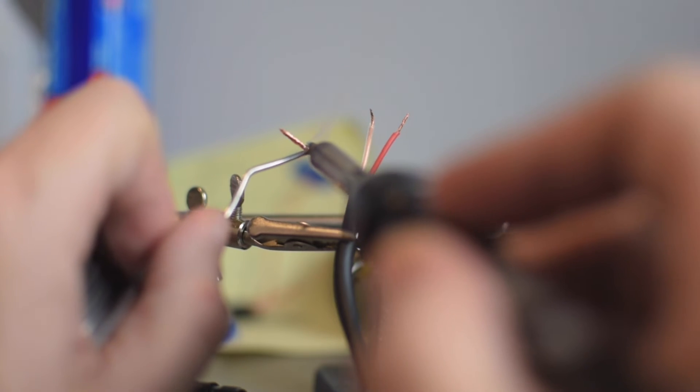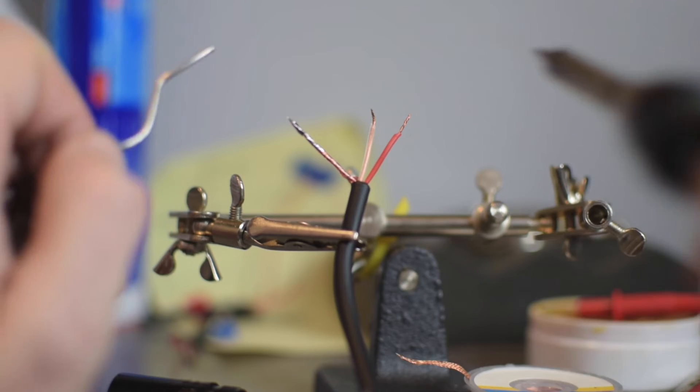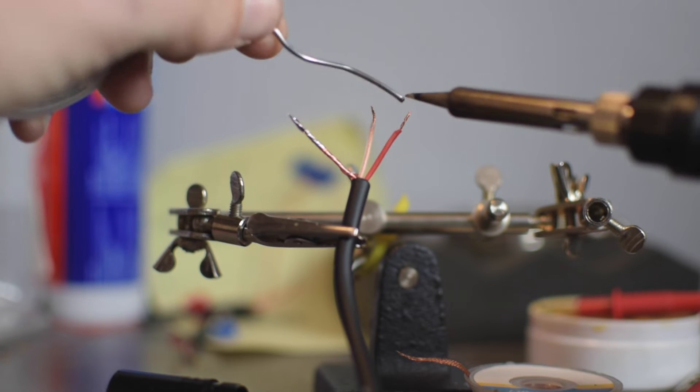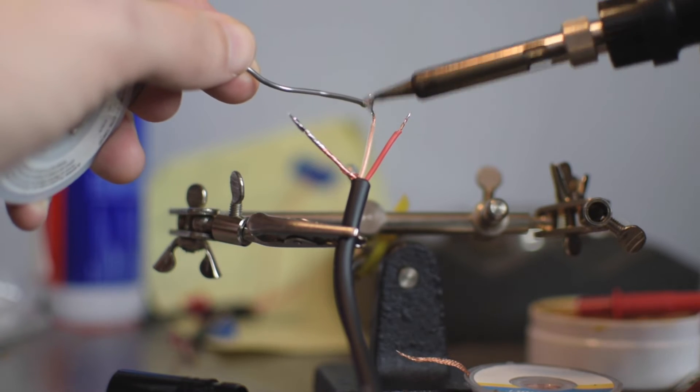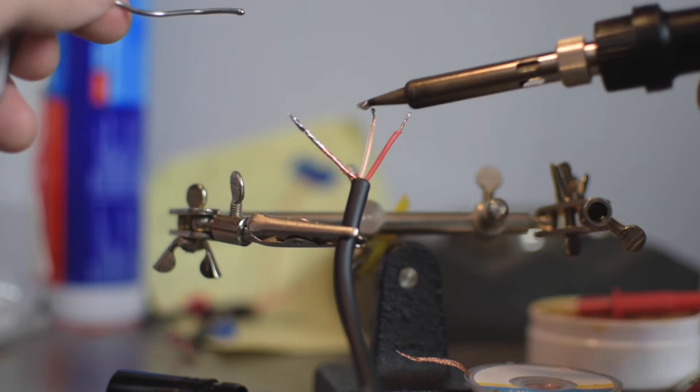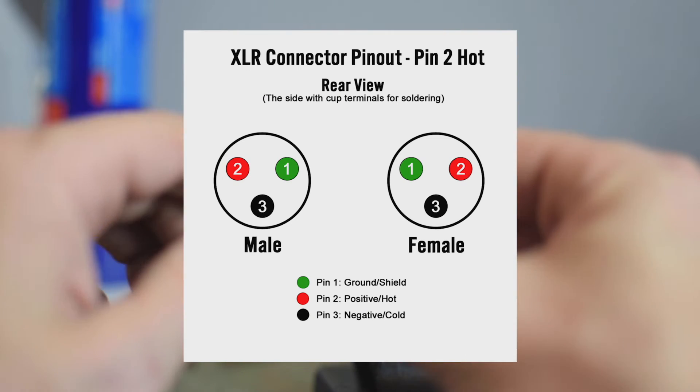All right, then we're going to tin our wires. Let's start with tinning the ground, then the positive and the negative. Then we'll switch them out with our helping hands.